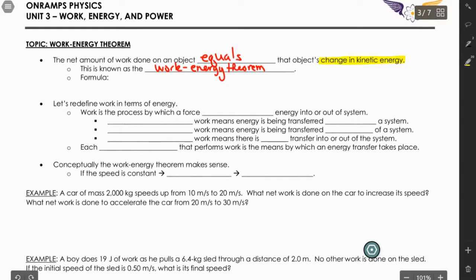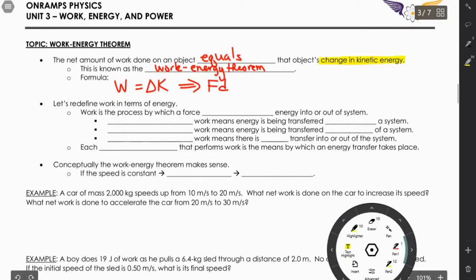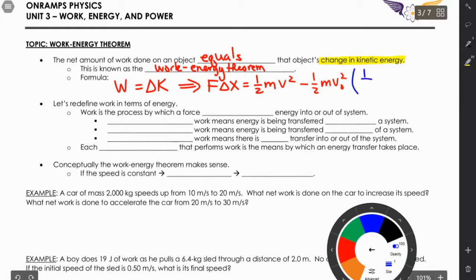The net work done on an object equals that object's change in kinetic energy. Mathematically: W = ΔKE. We can expand this — the formula for work is F·Δx, so F·Δx = ½mv² - ½mv₀². You could also write the kinetic energy part in a factored form, which actually helps when solving for a final or initial velocity.